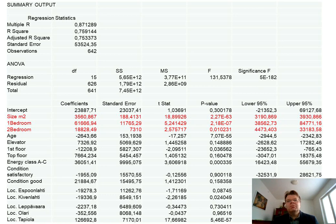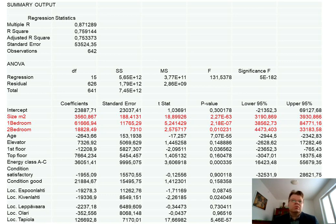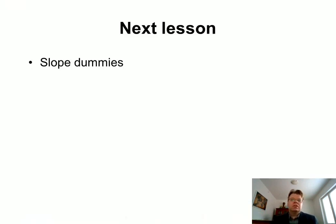The point here is that dummy variables can be used even for quantitative variables — you might convert them to categorical form to capture possible nonlinearities. Apartment age could be a similar example: rather than modeling age as a continuous variable, you might divide it into age groups such as 0–10 years, 10–20 years, and so on. This completes the discussion of multiple dummy variables. All the previous examples use so-called intercept dummies, which create a parallel shift of the regression line. In the next lesson, I will consider slope dummies.